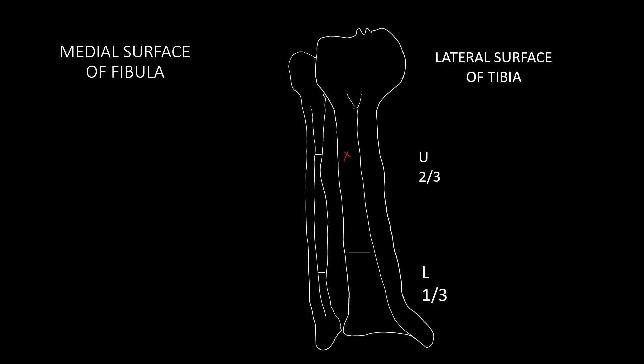The medial surface of the fibula is divided into three parts: an upper one-fourth, a middle two-fourths, and a lower one-fourth. The middle two-fourths is further divided into an anterior half and a posterior half.